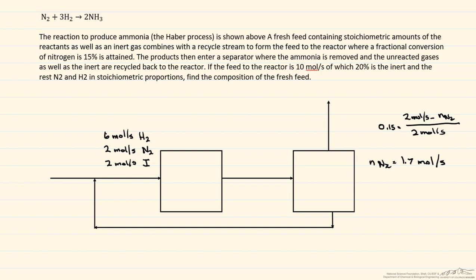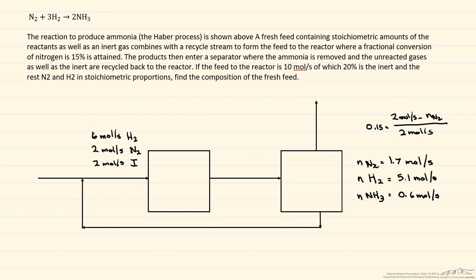So we use atomic species balances for hydrogen and nitrogen to solve for the other two species coming out. So let's put all of these onto our diagram. Note that I didn't need to put the species right here because the ammonia comes off in this stream here, and the rest of the species are recycled.